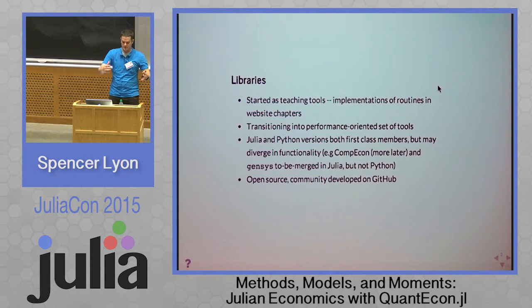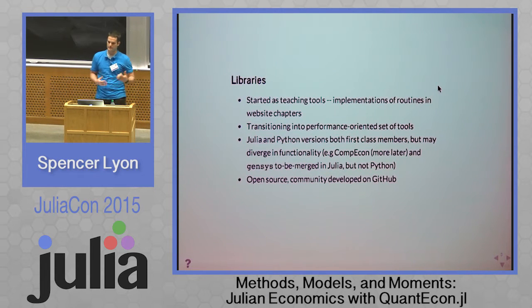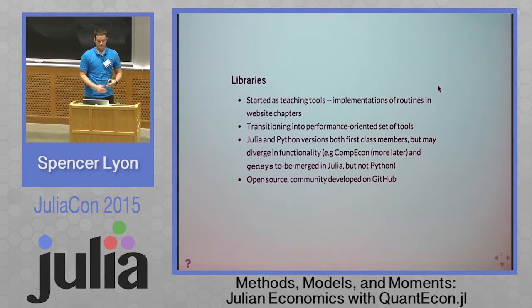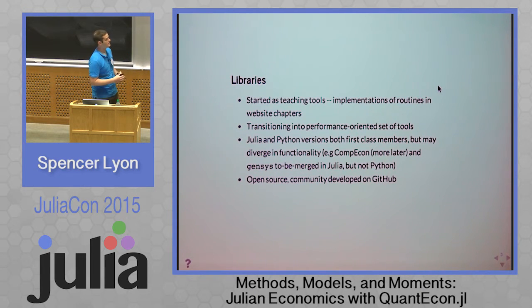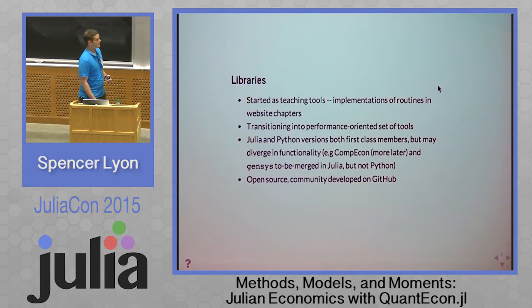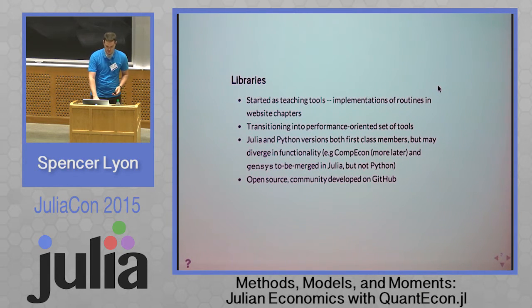Now let's talk about the libraries. They started as teaching tools, mainly implementations of the different models and methods found in the website lectures. But now we're transitioning into more performance-oriented tools that researchers and practitioners can use. The Julia and Python versions of the library are both first-class citizens — neither is inferior to the other. At this point they have the same functionality, but that may not hold in the long run, since I have tools written in Julia that aren't replicated on the Python side. In the near future, Julia's functionality will likely be extended beyond that of Python. All our code is open source and community developed on GitHub.